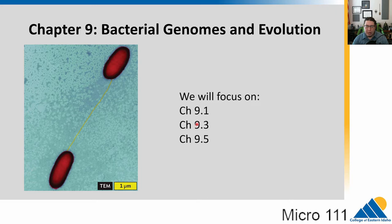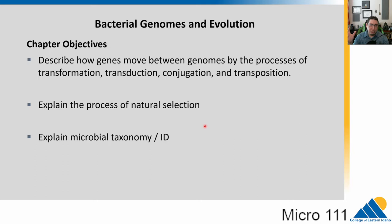We're only going to focus on chapter 9.1, 9.3, and 9.5, and I'm going to switch the order of them. In this chapter, we're going to talk a lot about how genes can move around in genomes, how genomes evolve, particularly in microbes. We have transformation, transduction, conjugation, and transposition — all very important ways of shaking up the genome, giving us the raw material for evolution to occur. We need to understand natural selection, and then we'll talk about how we classify and identify microbes.